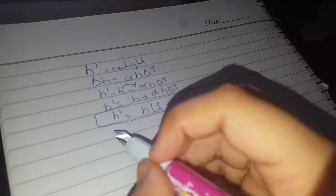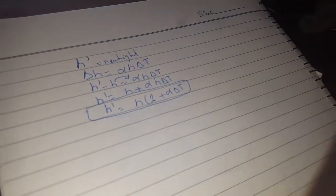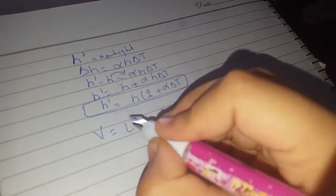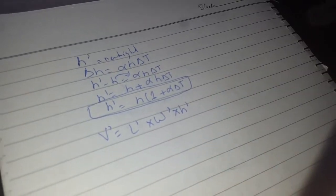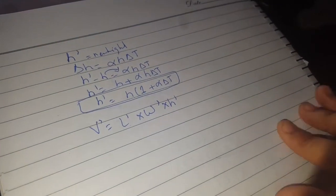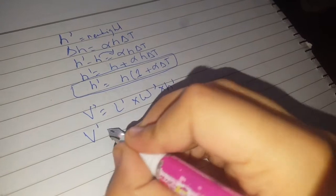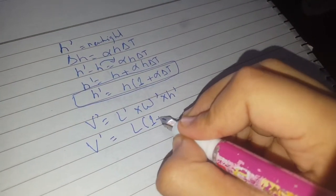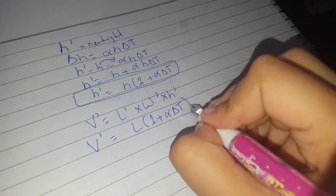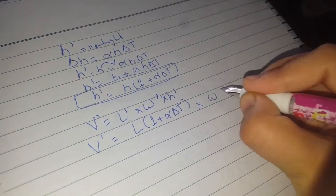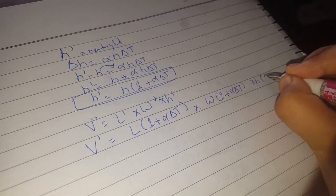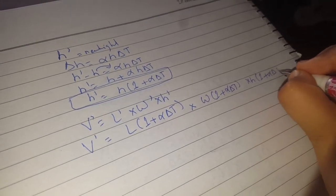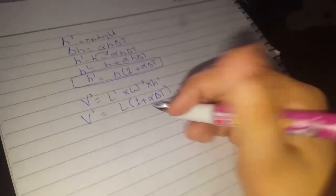Now we substitute these three expressions into the new volume formula. V₀ = L₀ × W₀ × H₀, so V₀ = l(1 + αδt) × w(1 + αδt) × h(1 + αδt).